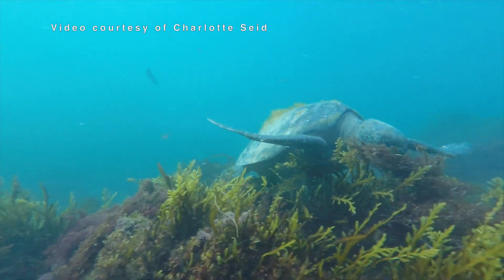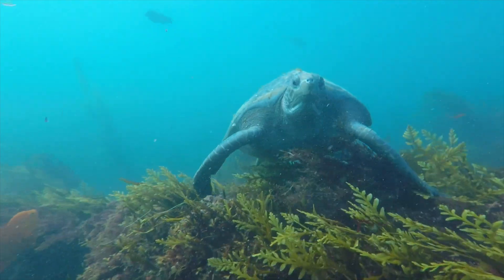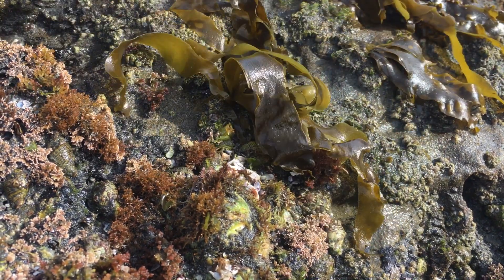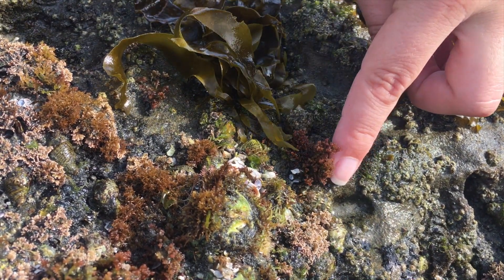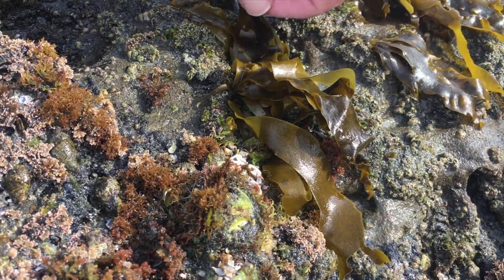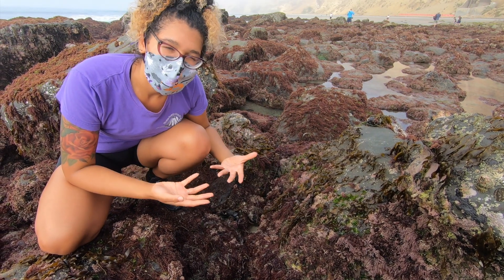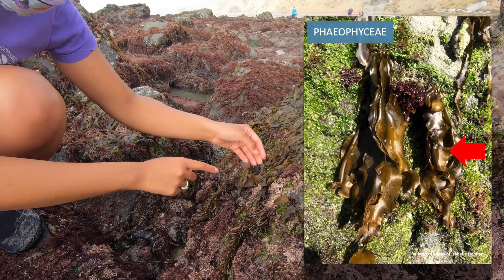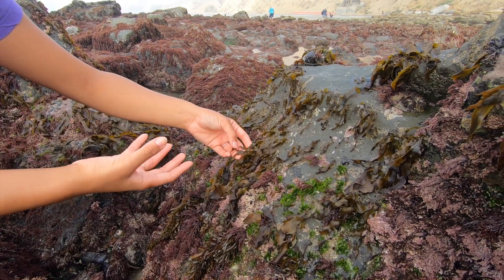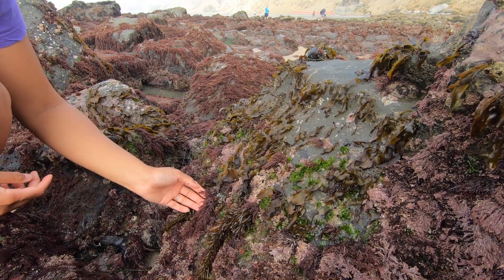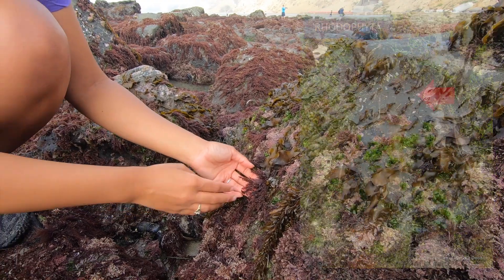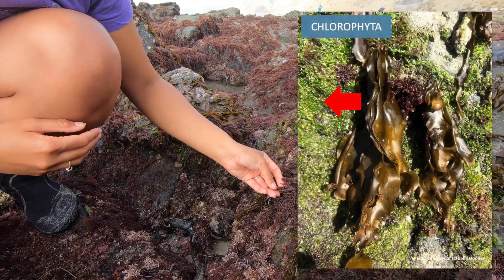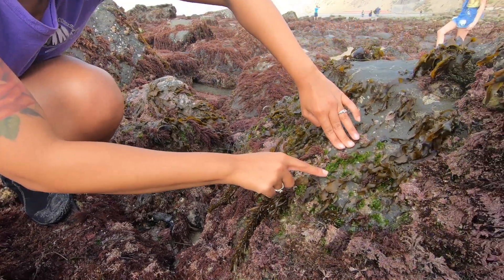Within the intertidal zone, seaweeds are incredibly important and often the species that unfortunately get overlooked. Seaweeds are really important because they provide food for some animal species, and also provide habitat — some animals will shelter under seaweed during low tide to avoid being too hot. There are generally three different types of seaweed. We have brown algae, or Phaeophyceae, usually identifiable by their brown color. We also have red seaweed species, or Rhodophyta, which are generally a reddish color. And we also have green seaweed species, or Chlorophyta, like the seaweed species you see right here.